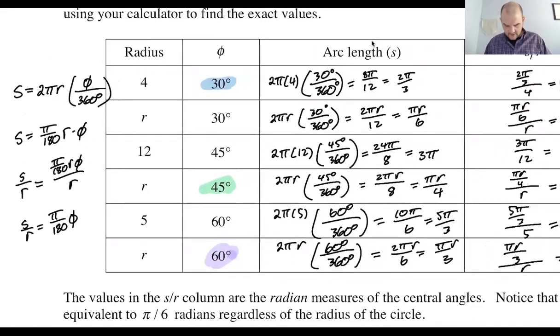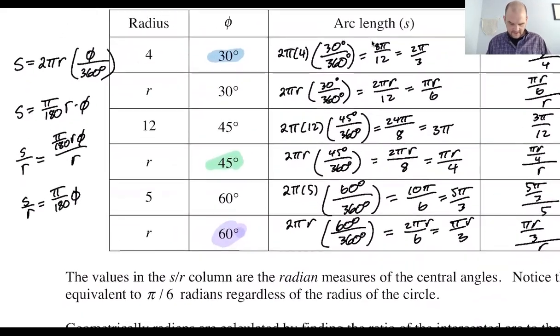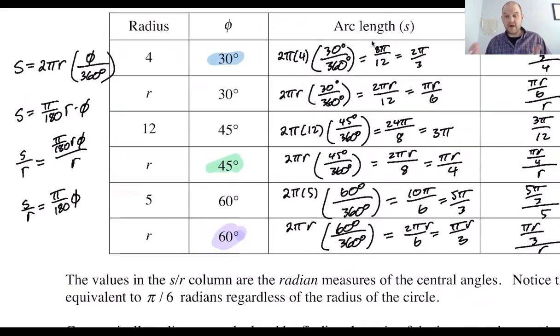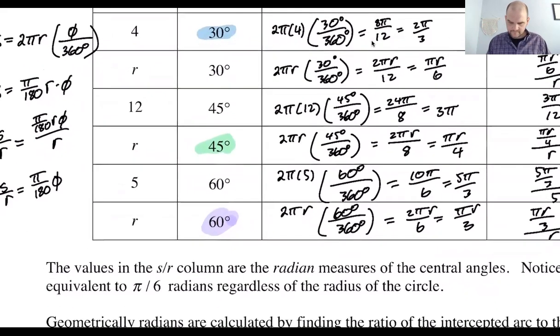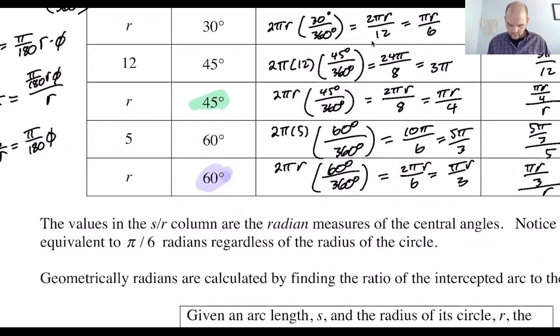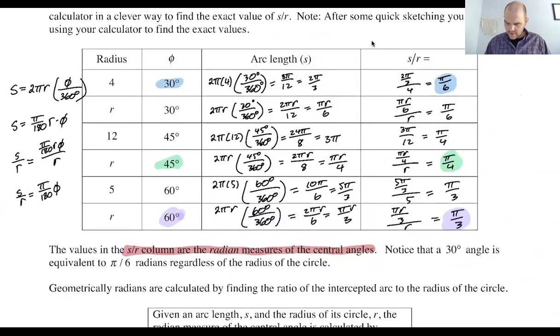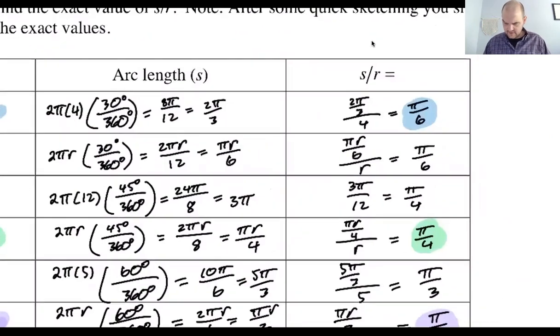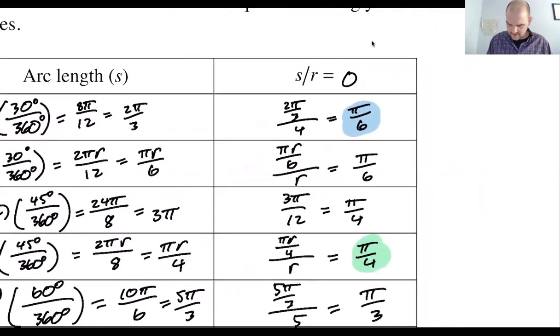Now what's really interesting, the values in that last column are called the radian measure of the central angle. So the radian measure, so I'm going to actually write here equals, I'll say theta in radians.